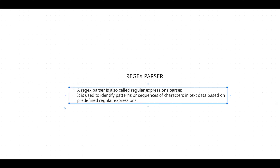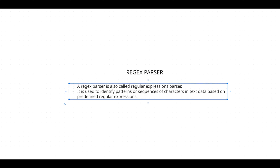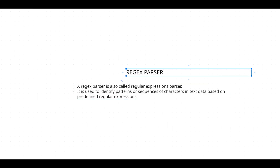So what is regex partial? Here 'regex' stands for regular expression. A regex partial is also called a regular expression partial — 'reg' stands for regular and 'ex' stands for expression. It is used to identify patterns or sequences of characters in text data based on predefined regular expressions.